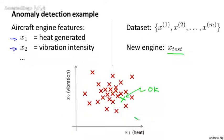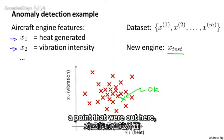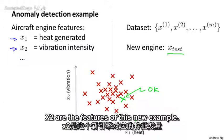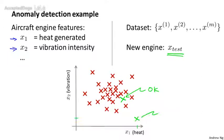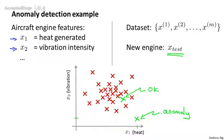Whereas if your new aircraft engine, if X test were a point that were out here, so if X1 and X2 of the features of this new example X test were all the way out there, then we would call that an anomaly.